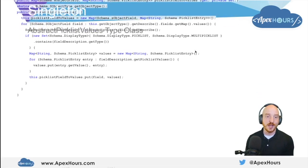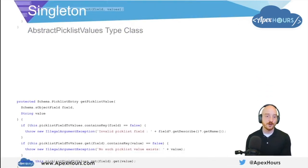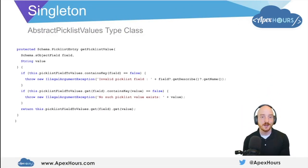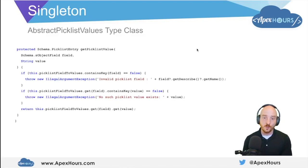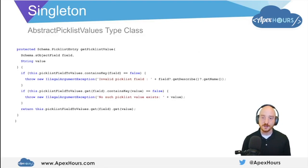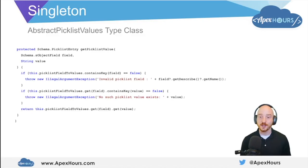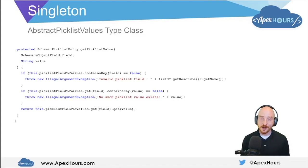If we scroll down just a little bit more, there's more to this class: the protected 'getPicklistValue' method itself, which will look at the map constructed when the instance was created. It will make sure that the picklist field and the value passed in are actually valid, and if they are valid it will return the PicklistEntry for the given field and the given picklist value API name. So that's our parent abstract class.